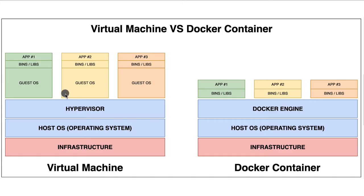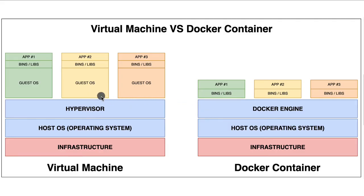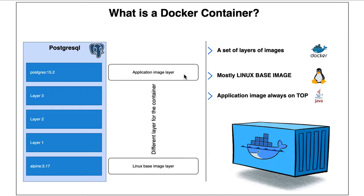Virtual machines provide stronger isolation since they run independent OS instances, though hypervisors can still be potential attack vectors. Use cases: Docker is well-suited for microservices, cloud-native applications, and situations where you need to deploy and scale quickly with minimal overhead. Virtual machines are more appropriate for applications with strong isolation requirements, legacy applications, or when running multiple OS instances on the same host. In summary, Docker is lightweight, resource-efficient, and portable, while virtual machines provide stronger isolation through hardware-level virtualization.